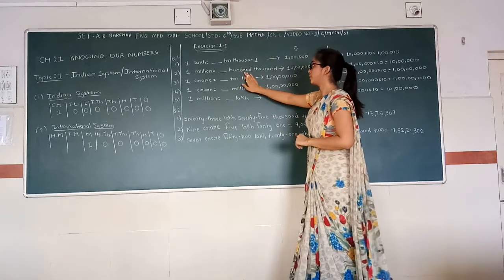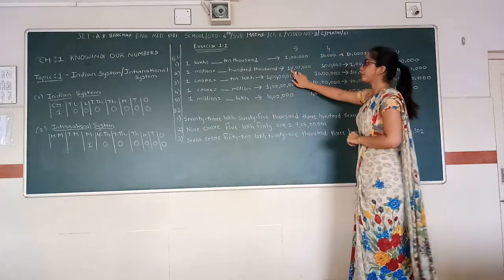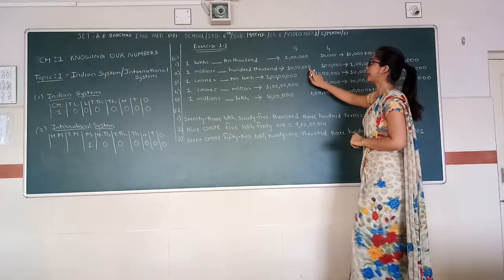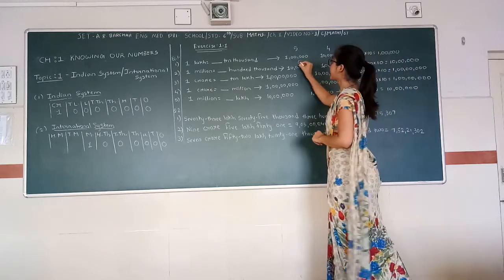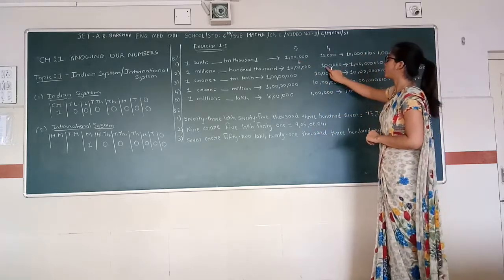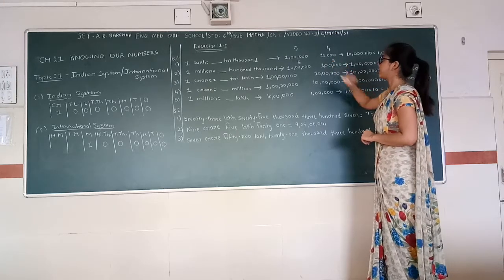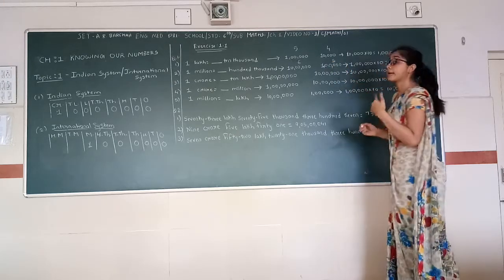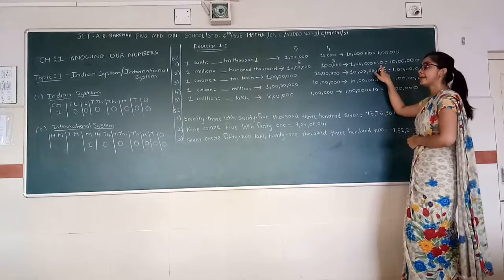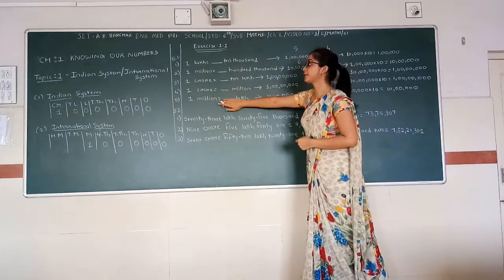Next: one million is equal to how many hundred thousands? In one million we have six zeros, and in hundred thousand we have five zeros. So again we have to multiply hundred thousand by ten. Similarly we have to do for questions three, four and five.